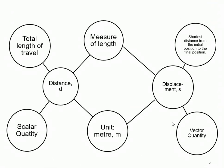As you can see from this double bubble map, distance d is the total length of travel and it's a scalar quantity. Displacement is the shortest distance from the initial position to the final position, and it's a vector quantity. Recalling from Chapter 1, vector quantity means displacement has both magnitude and direction, whereas scalar quantity - distance - has only magnitude. The similarities between distance and displacement are that both are a measure of length and both have the unit of meters. The difference is distance is the total length traveled, while displacement is the shortest distance from initial to final position.